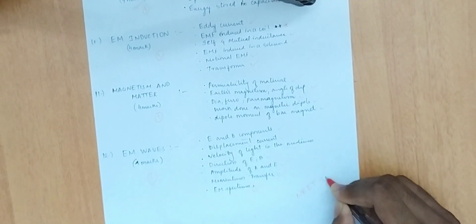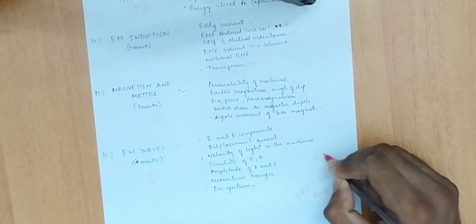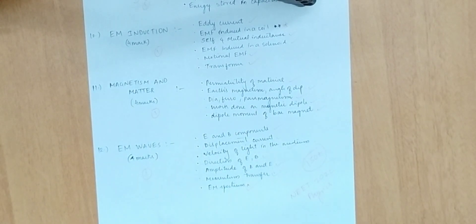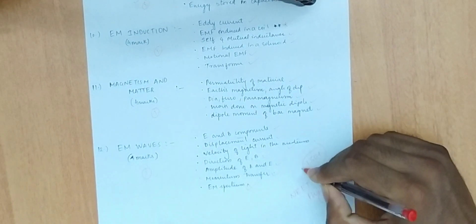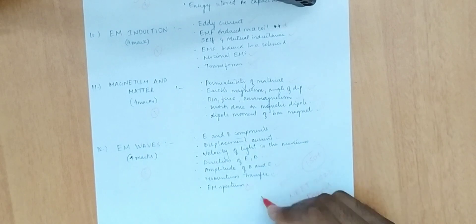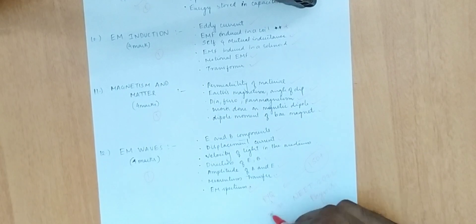To get 150 above marks in physics in 2022, you need to learn all of these topics. Lectures are available on YouTube covering these chapters. Refer to notes and cover complete concepts. After learning these chapters and topics, practice previous year questions — 20 to 30 problems per chapter.